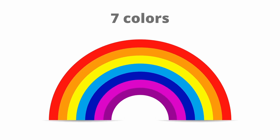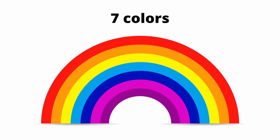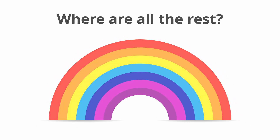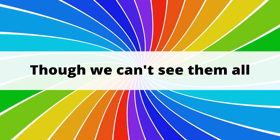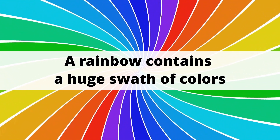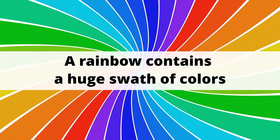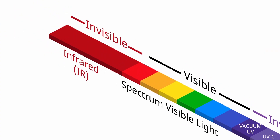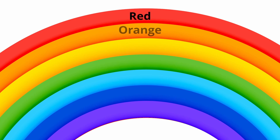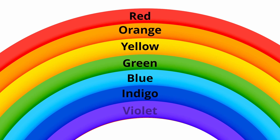When you look up at a rainbow, you'll notice that there are only seven colors represented, but where are all the rest? Though we can't see them all, a rainbow contains a huge swath of colors from the ultraviolet range to the infrared side of the spectrum. The colors that we can see, however, are always in the same order: red, orange, yellow, green, blue, indigo, and violet.